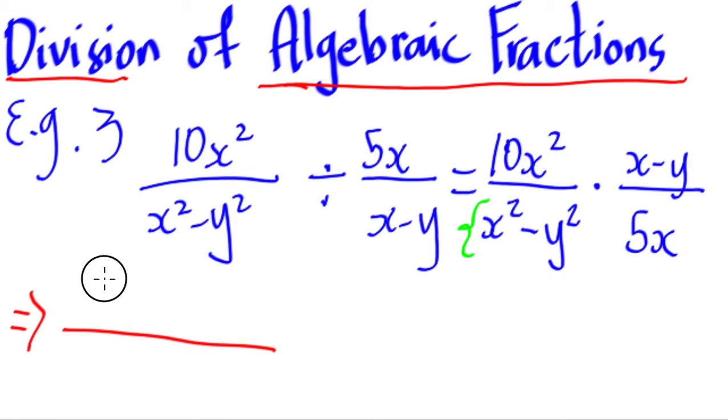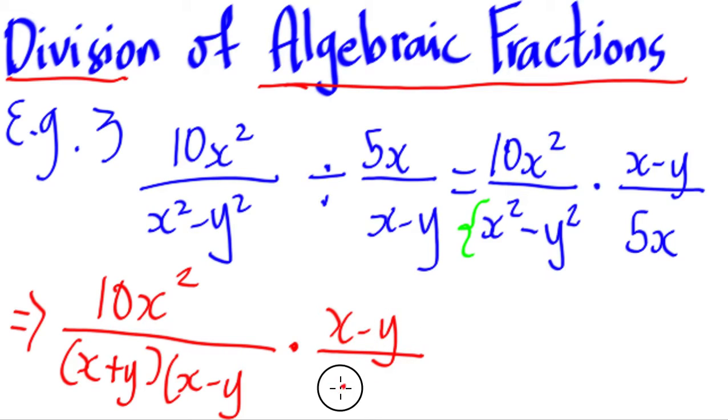What we'll have is 10x squared all over, so we have x squared minus y squared. So what we have is x plus y times x minus y, and then times x minus y all over 5x.